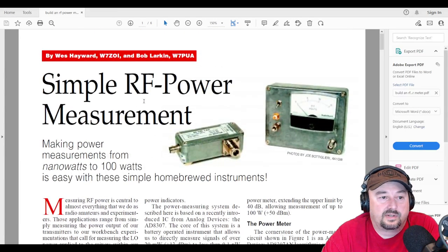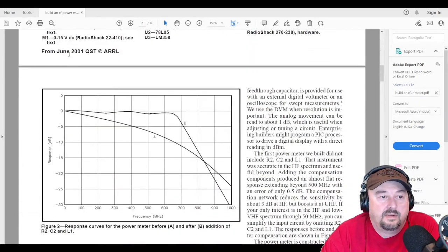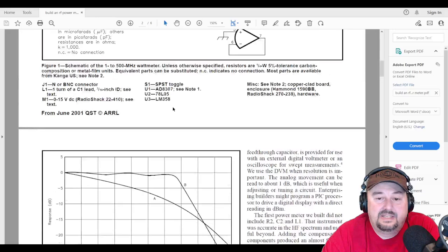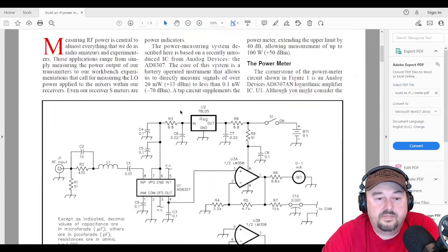If you wanted to get this article, you could just Google these guys' call signs, and I'm pretty sure you would get it. But the other one is that this article goes back to the June 2001 QST. So if you type in Google June 2001 QST power tap, you should get this article as well.